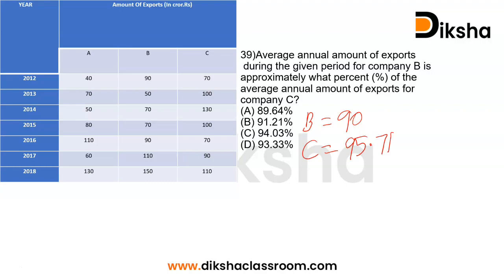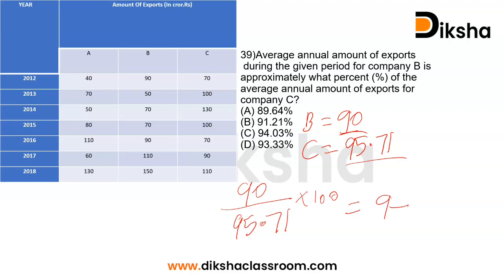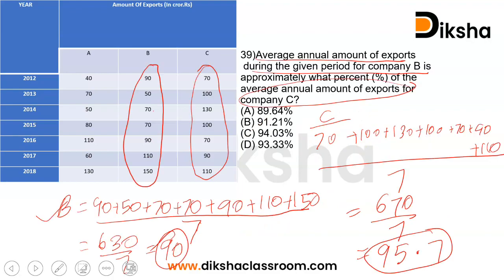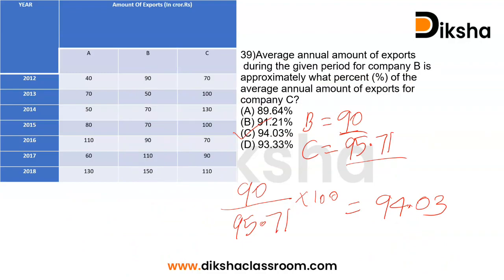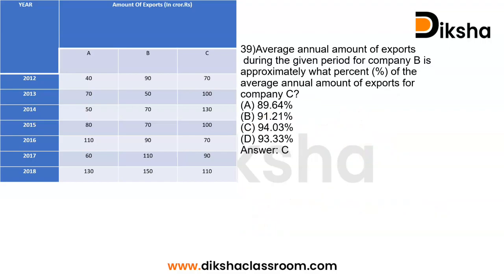The question is: the average annual amount of export for company B is what percent of company C? So we compute 90 divided by 95.71 multiplied by 100, and we get approximately 94.03. That's option C as the correct answer. We found the average annual export of B, then of C, and calculated B as a percentage of C to get 94.03.